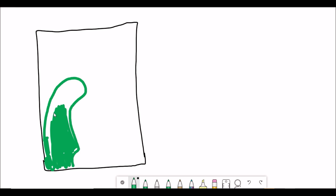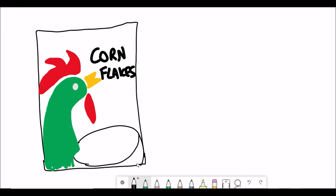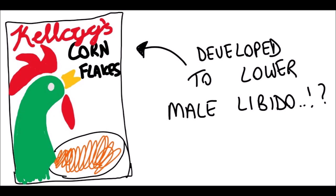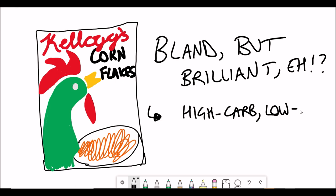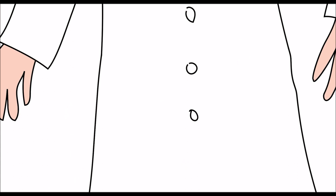One interesting story that Dave mentions is the origin of cornflakes by Mr. Kellogg's, and how actually cornflakes was developed to lower the male libido. I thought this was quite an interesting story. It's due to the fact that cornflakes is very high in carbohydrates and very low in fats, and this is thought to manipulate and alter the hormone levels, in particular for males, testosterone. But I still like cornflakes - they may be bland but they're brilliant.